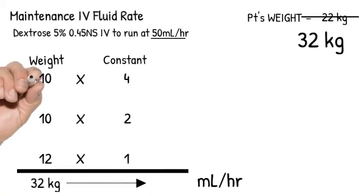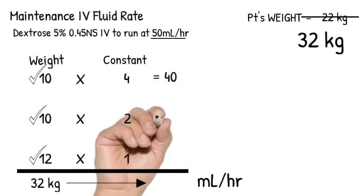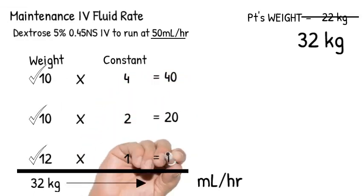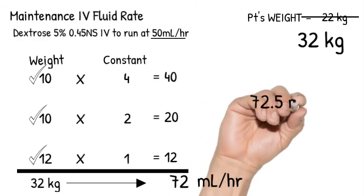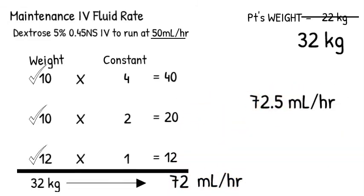Set up your weight, first 10, second 10, and remainder. Set up the columns and do the math. This is 40, this is 20, and this is 12. We get 72 mls per hour total. Close enough to 72.5 mls per hour from the first method? Absolutely.